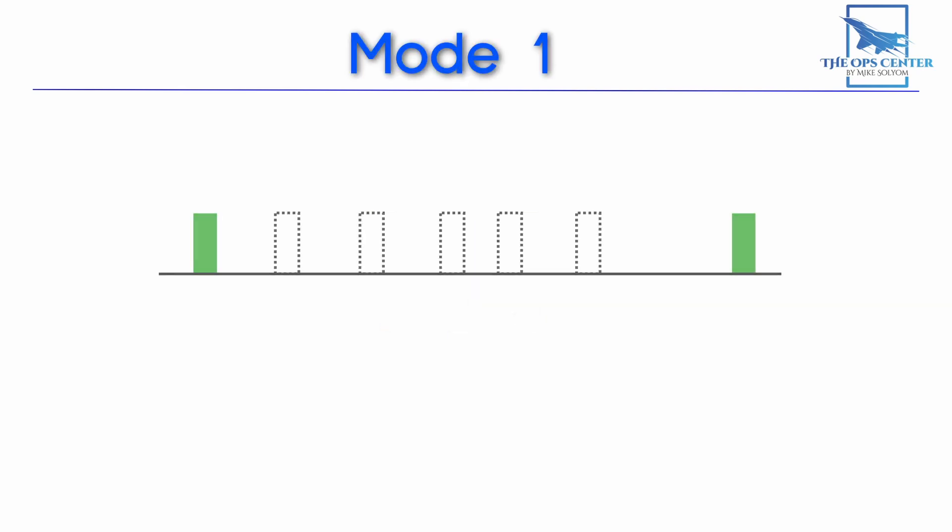So in a mode 1 response, we could see 3 possible pulses here to represent the first digit, which could be anything from 0 to 7. Then a second pair of possible pulses here. Since there are only 2 in this set, it means the digit can only go from 0 to 3. So a mode 1 response could be anywhere from 00 to 73. Typically mode 1 is used to indicate the aircraft or mission type, like cargo plane or bomber. So there wasn't a need for a lot of codes.